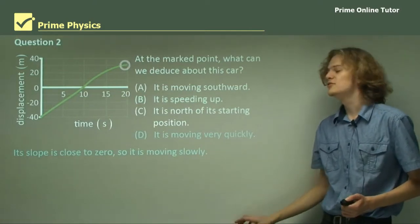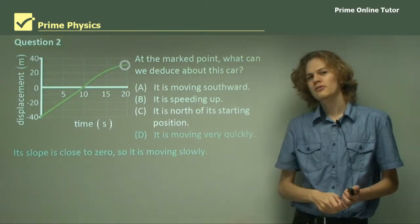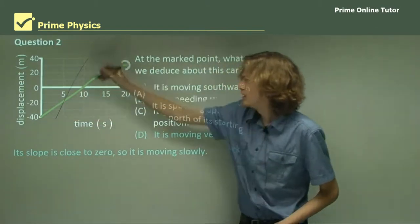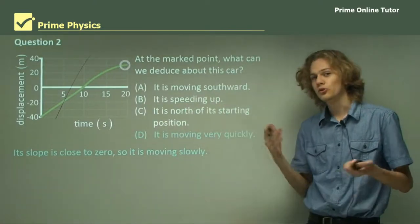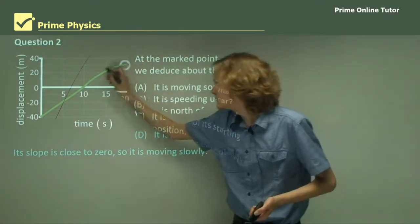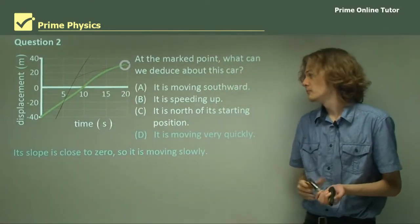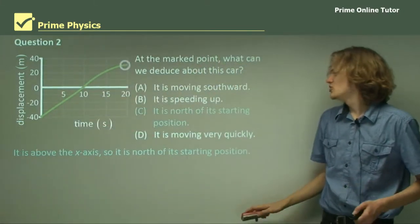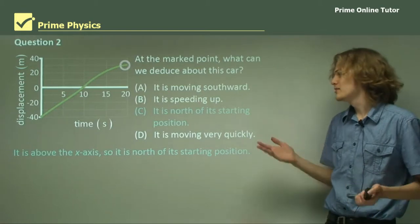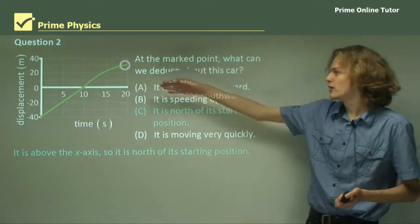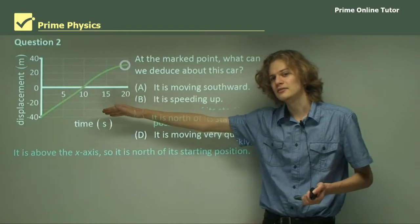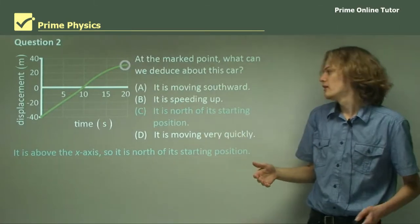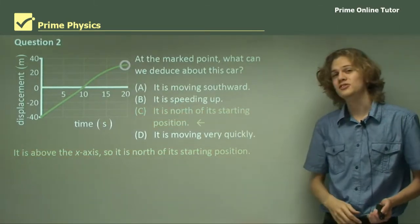What about option D — it is moving very quickly? Remember, the velocity of an object depends on the slope of the line. If it's very steep it's moving quickly; if it's close to zero it's moving quite slowly. So D is incorrect. Finally, option C: it is north of its starting position. We can tell the position of the object simply by looking at whether it's above or below the x-axis. In this case it is above the x-axis, which means north. So C is the correct answer — it is north of its starting position.